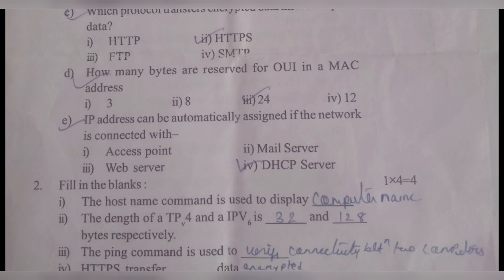To clarify: 8 bits make one byte. Since OUI uses 24 bits, that equals 3 bytes. So the correct answer is 3 bytes.